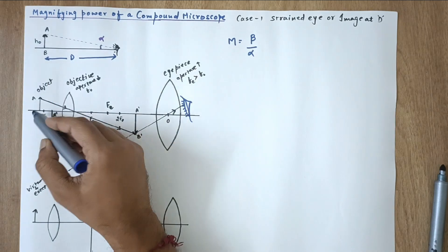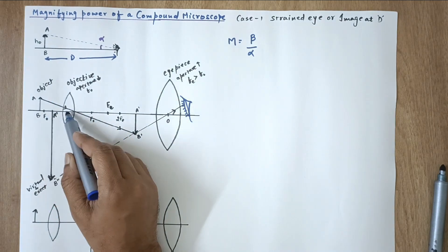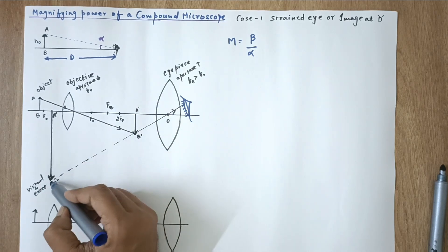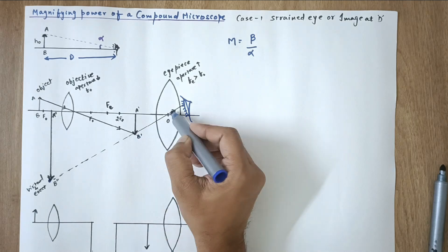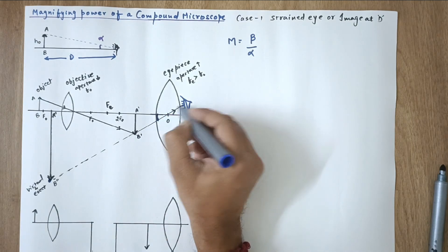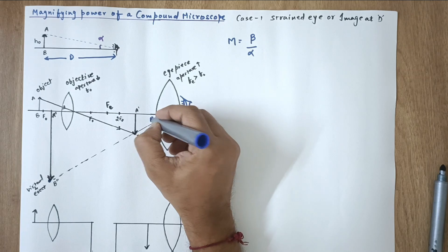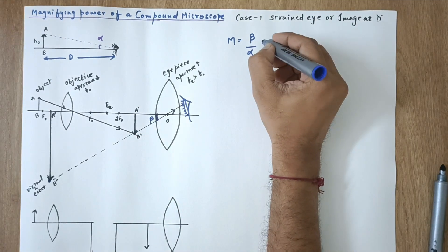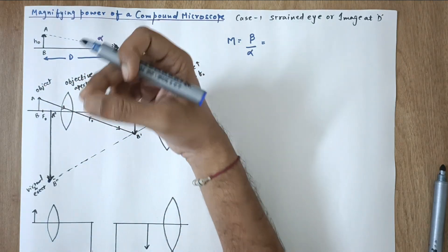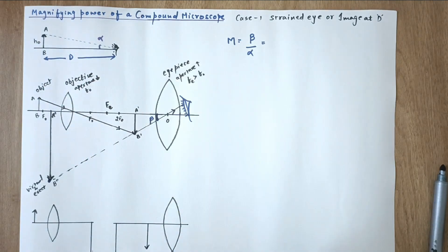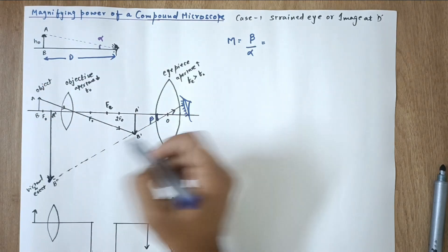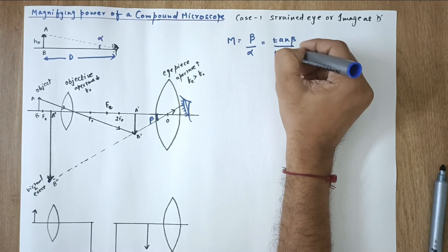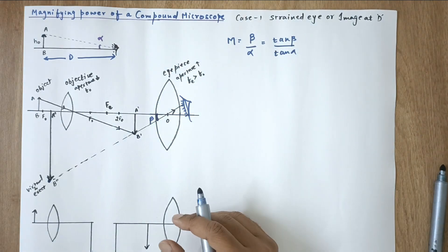When the same object is placed in front of the objective, its final image head makes angle beta with the eyepiece — which is essentially the same as the eye since they are very close together. Since we use this compound microscope to view very small objects, all angles are very small, so we can write M as tan beta over tan alpha.